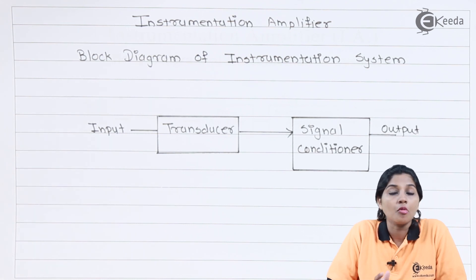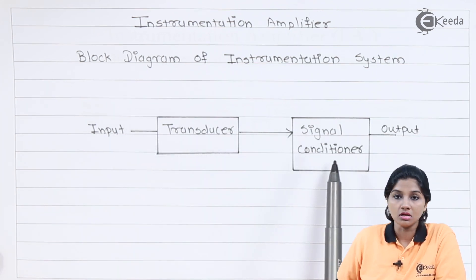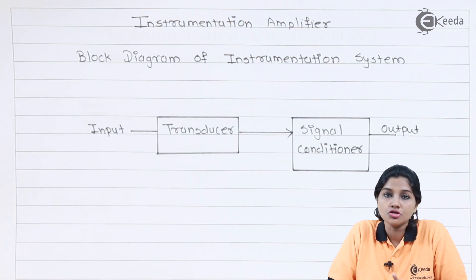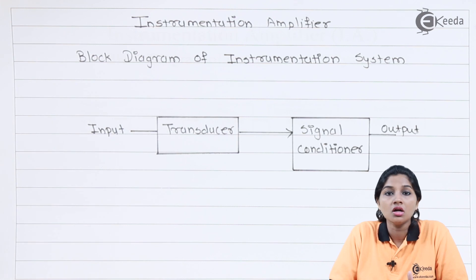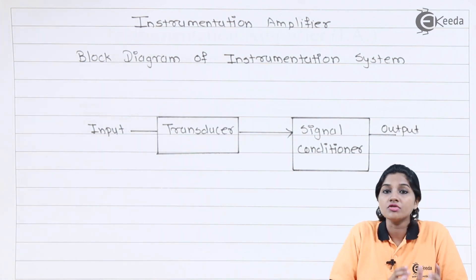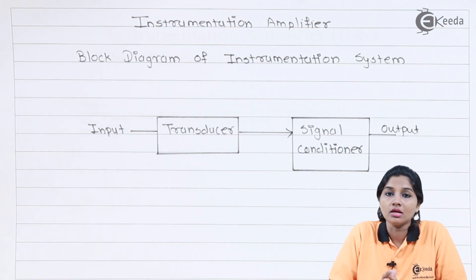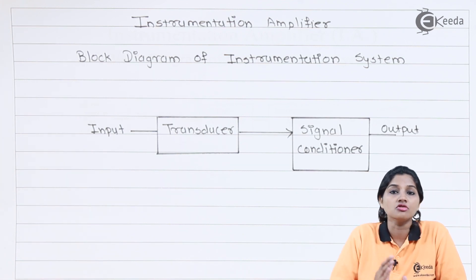Now if we look at the block diagram of an instrumentation system, we will come to know that it consists of two blocks. The first block is the transducer and the second block is the signal conditioner. A transducer is basically a device which is used to convert one form of energy into another form. In many consumer and industrial applications, the measurement and control of quantities such as pressure, temperature, and humidity are required. We cannot apply these physical quantities directly to any system, so it is very important to convert the physical quantity into the equivalent electrical signal. This conversion process is done by a device called a transducer.